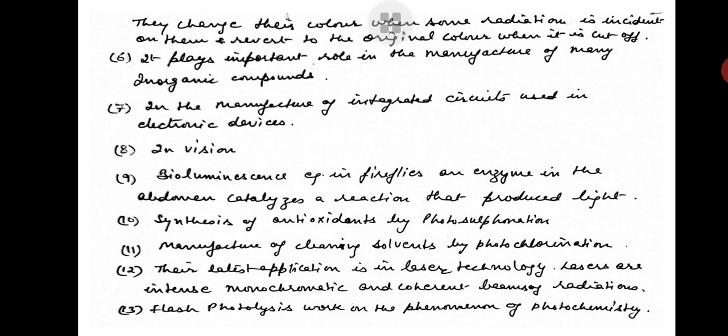Next is bioluminescence. Example: in fireflies, an enzyme in the abdomen catalyzes a reaction that produces light. Next application of photochemistry is in the synthesis of antioxidants by photosulfonation. Next application is in the manufacture of cleaning solvents by photochlorination.